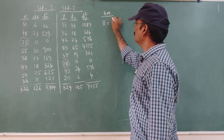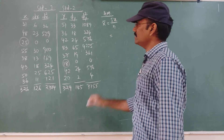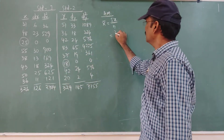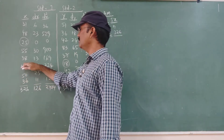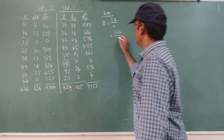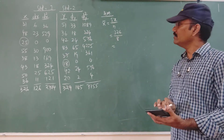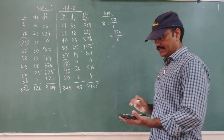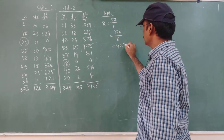I will use the arithmetic mean formula: x̄ = summation of x divided by n. The summation of x is 326. How many observations? 1, 2, 3, 4, 5, 6, 7, 8 — divided by 8. So 326 divided by 8 gives 40.75.